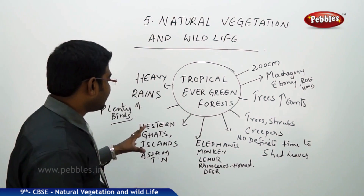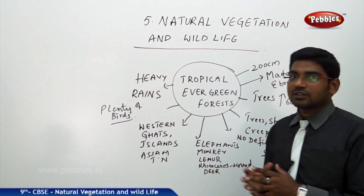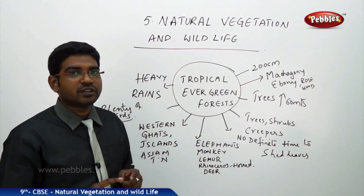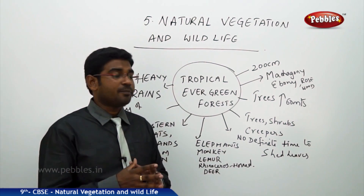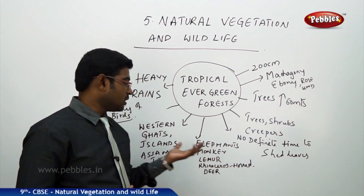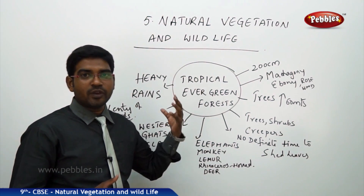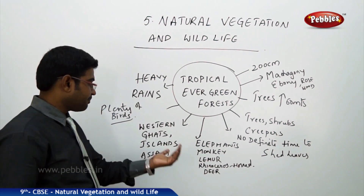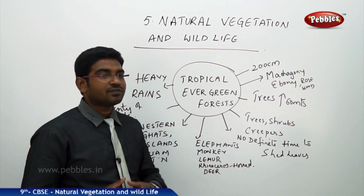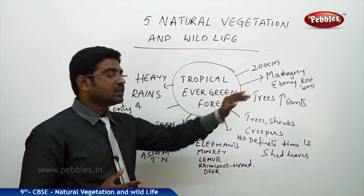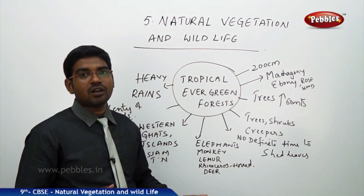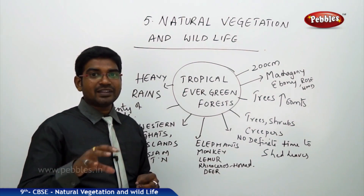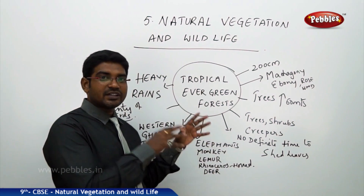A wide variety of birds are also present in the evergreen forest. To summarize, these forests receive heavy rainfall of up to 200 centimeters annually, are located in the Western Ghats, Andaman and Nicobar Islands, Lakshadweep, Assam, and Tamil Nadu, and are home to elephants, monkeys, lemur, horned rhinoceros, deer, and various birds. Precious trees like mahogany, ebony, and rosewood grow up to 60 meters tall, forming a multilayered structure of trees, shrubs, and creepers. There is no definite season for the trees to shed their leaves, which is why it is aptly called the tropical evergreen forest.